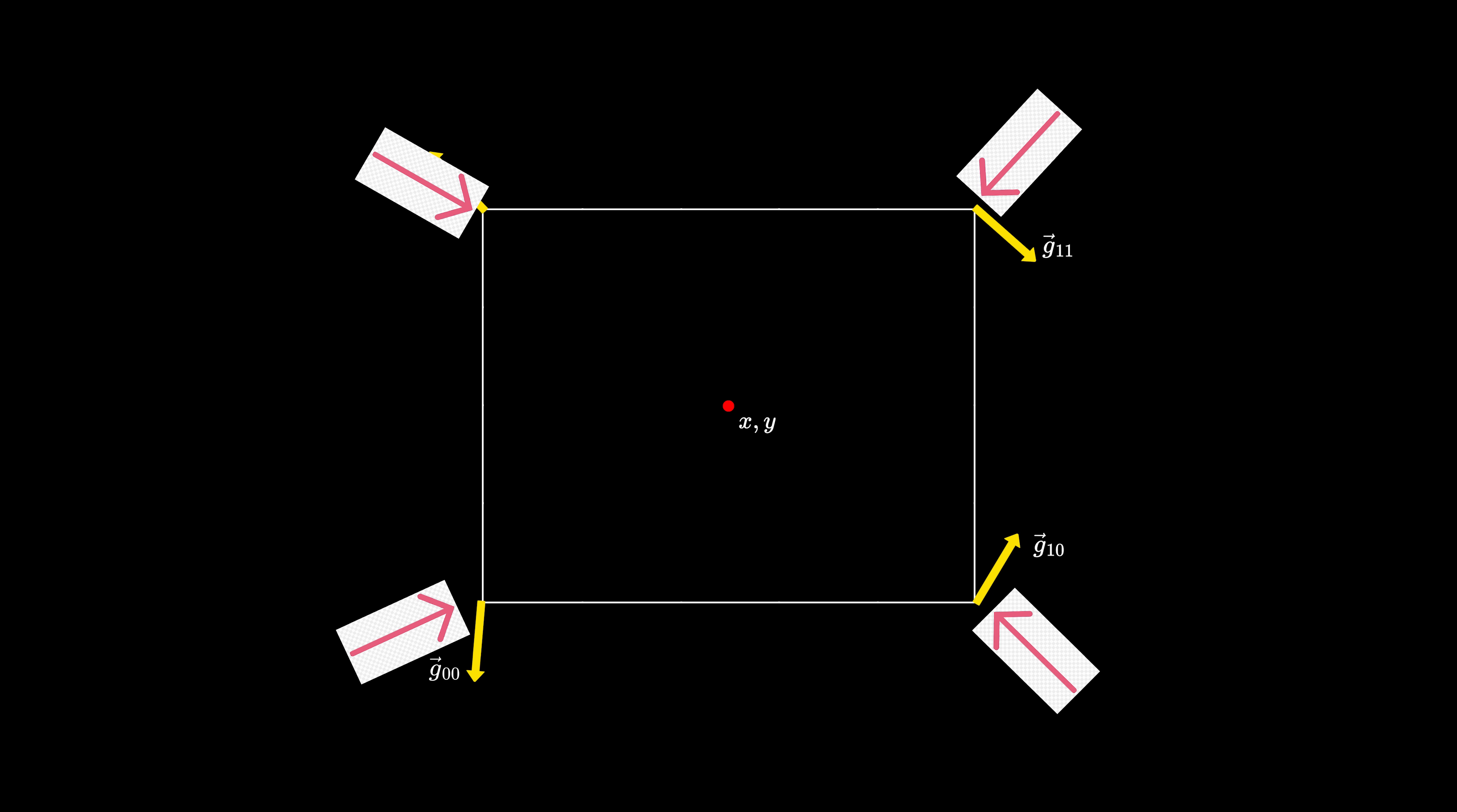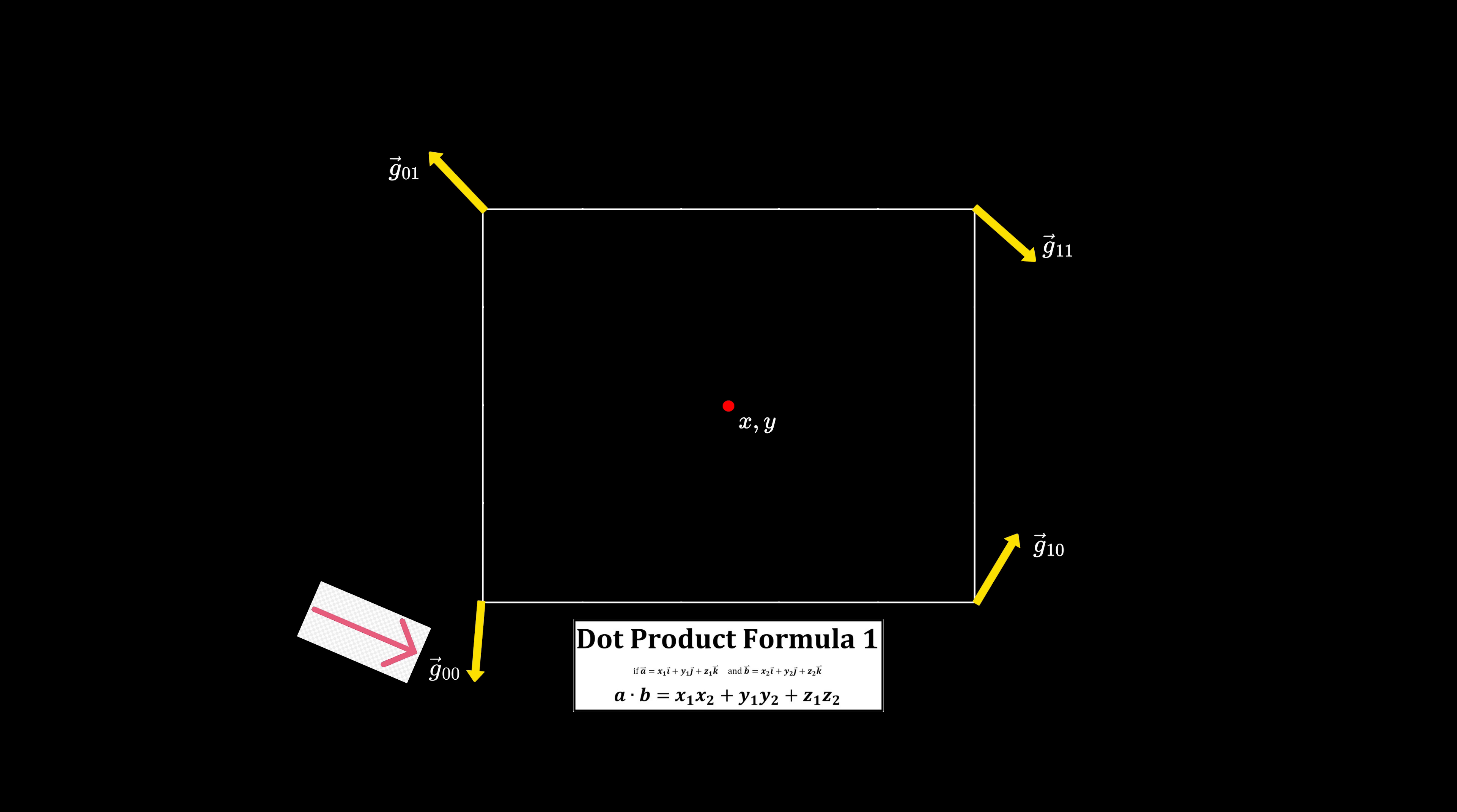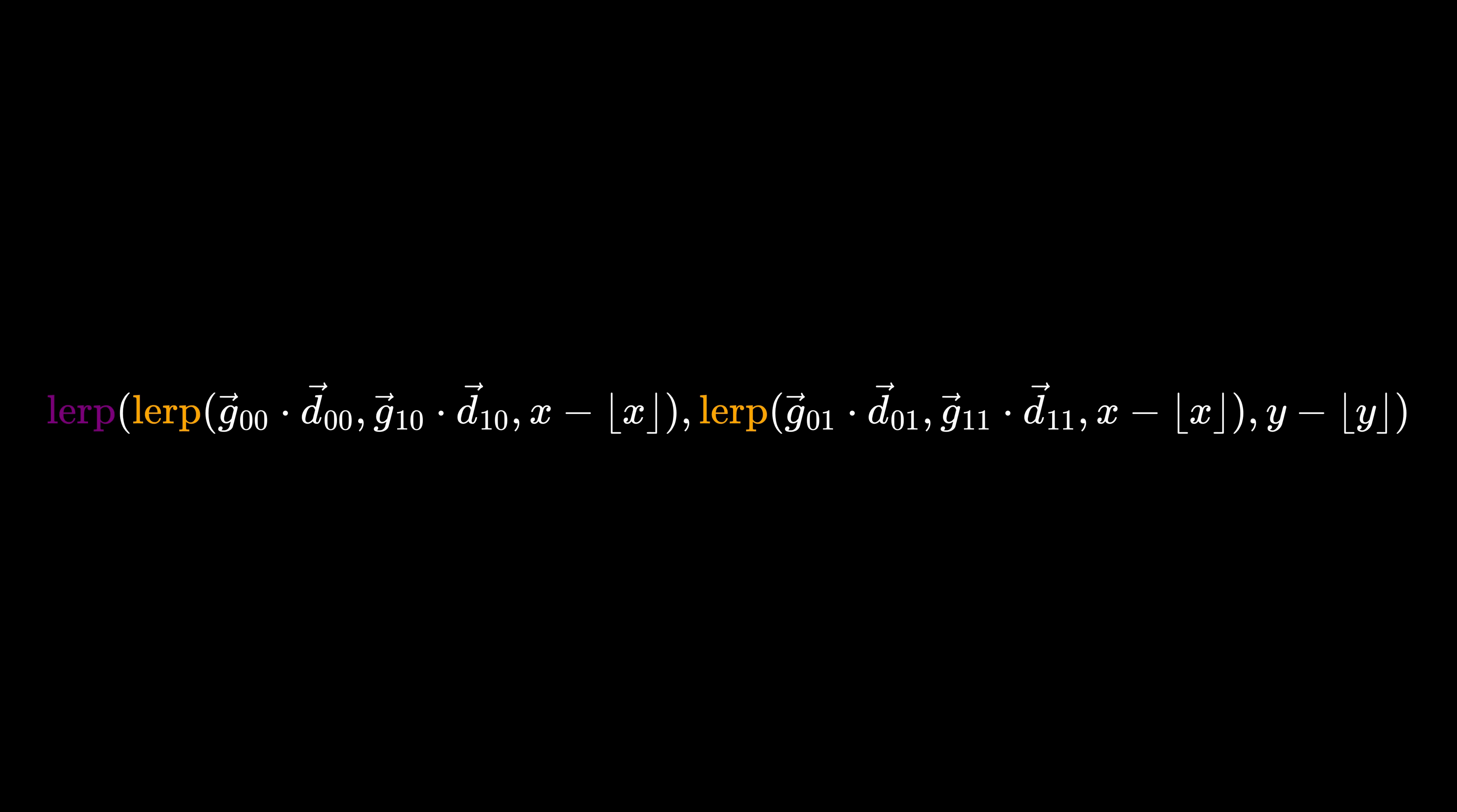Given a position on our lattice, for each corner of the square it falls within, we take the dot product of the gradient vector at that corner and the vector pointing towards the input position from the corner. Then the process is the same as value noise. We bilinearly interpolate between the four dot products, and we have perlin noise.